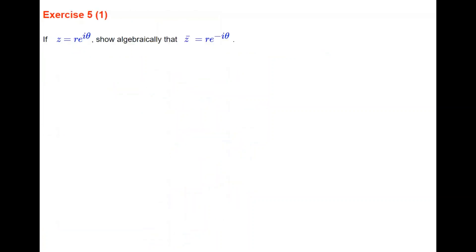It's time for you to do an exercise. If Z equals R·e^(iθ), show algebraically that the conjugate of Z, Z-bar, is R·e^(-iθ), and we'll use this result in exercise 6. I'll start you off: we know that e^(iθ) = cos θ + i·sin θ by definition, so we can write Z as R times (cos θ + i·sin θ). Stop the video and have a go at completing the proof.